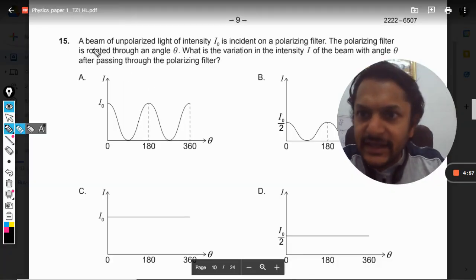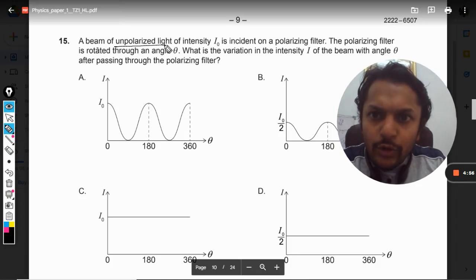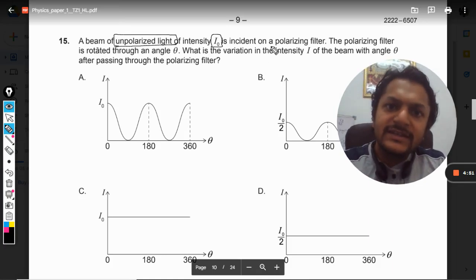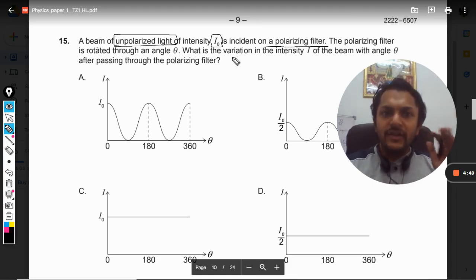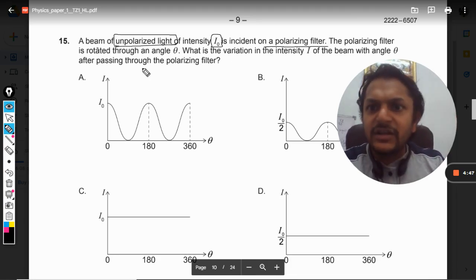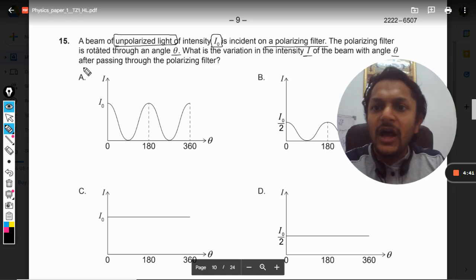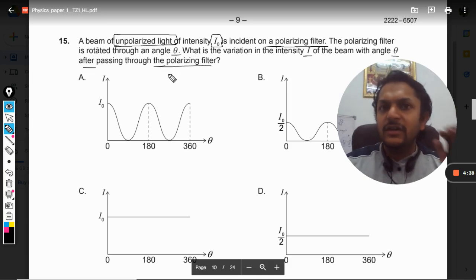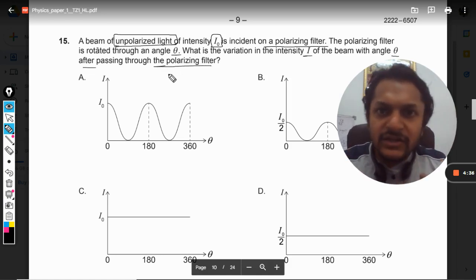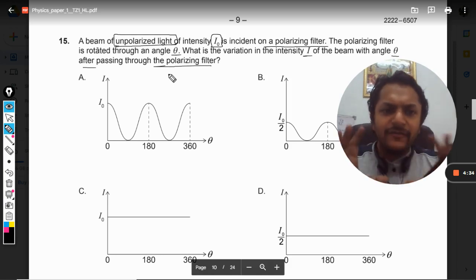Okay dear students, let us see: a beam of unpolarized light of intensity I₀ is incident on a polarizing filter. The polarizing filter is rotated through an angle θ. What is the variation of intensity I of the beam with the angle θ after passing through the polarizing filter? In this problem, they have created a beautiful question from the topic of polarization.